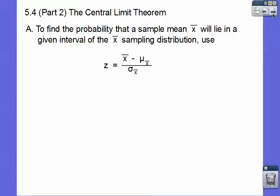To find the probability that a sample mean X bar will lie in a given interval of the sampling distribution, we use the z-score formula. Does this look familiar? The only difference is this is my sample mean right here.